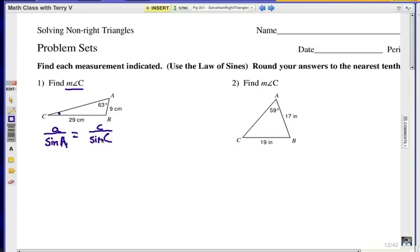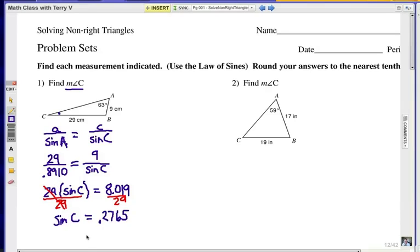Since angle A is 63, the sine value of that, just plug that in the calculator, is .8910. We usually go to four digits. We're going to cross-multiply and that will give us a new equation. 9 times .8910 is 8.019. Then we're going to divide each side by 29. It's a typical proportion here. We're going to cross-multiply and solve for the missing part. Sine C equals that decimal value.